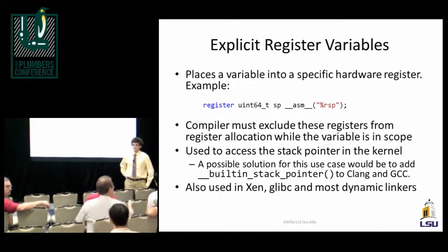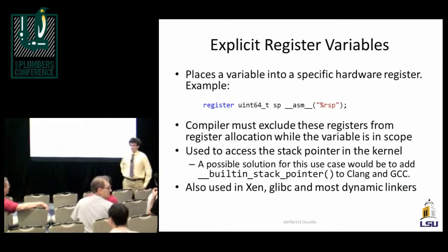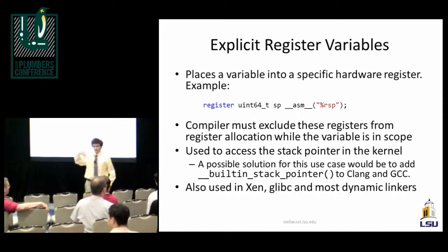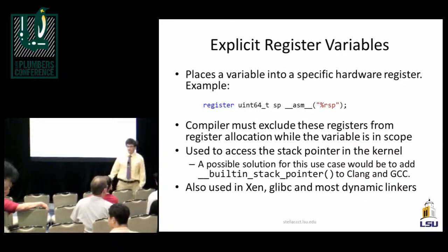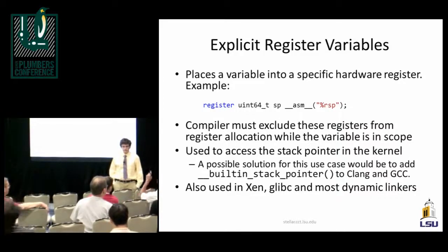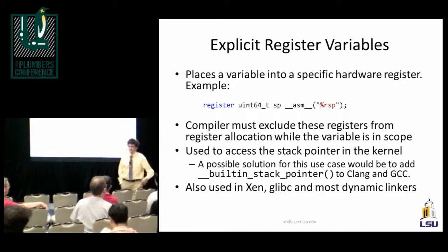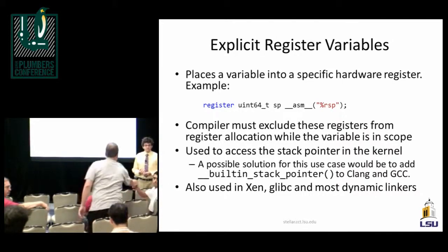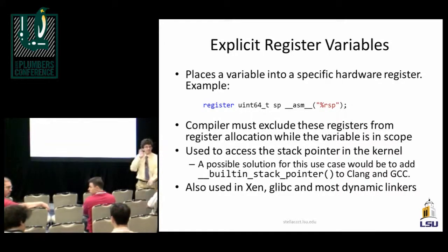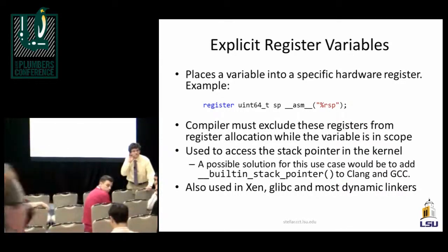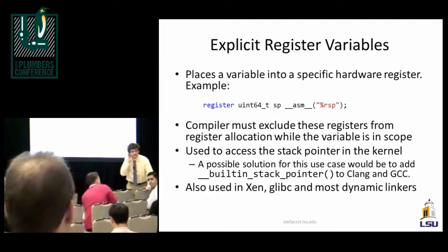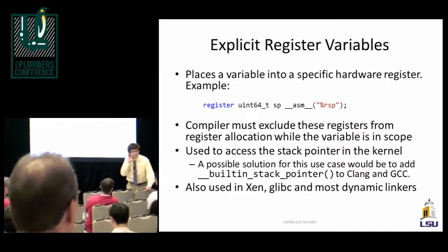While a global register variable is in scope, the compiler can't use that register for other allocation. This is hairy because you have to cook this information into the register allocator. In Clang, you'd need an AST node representing this data, then a pass over the AST to find all these places and inform register allocation. Also worth noting: GCC in LTO mode doesn't support global register variables either, so it needs to be fixed for both compilers.